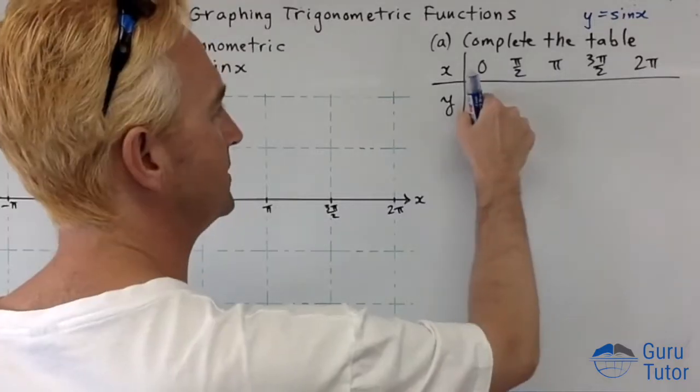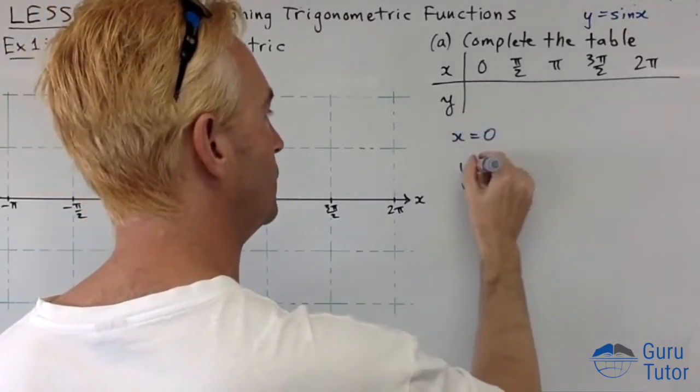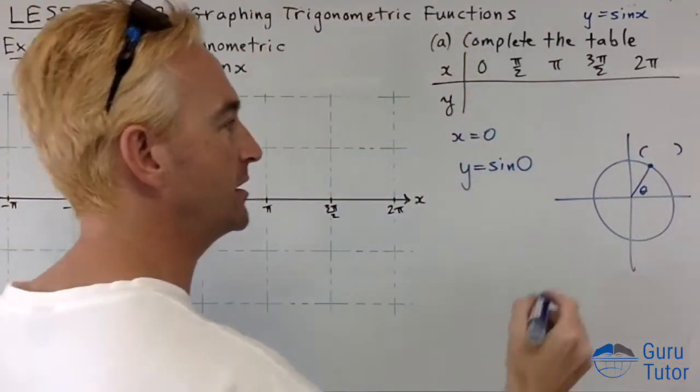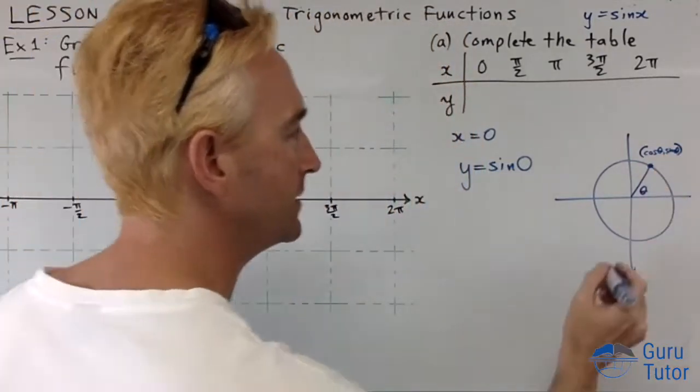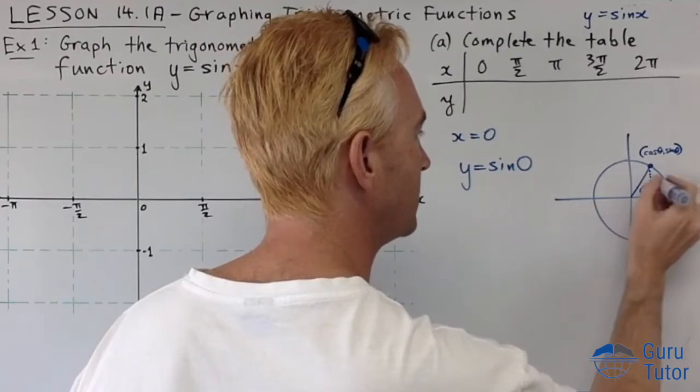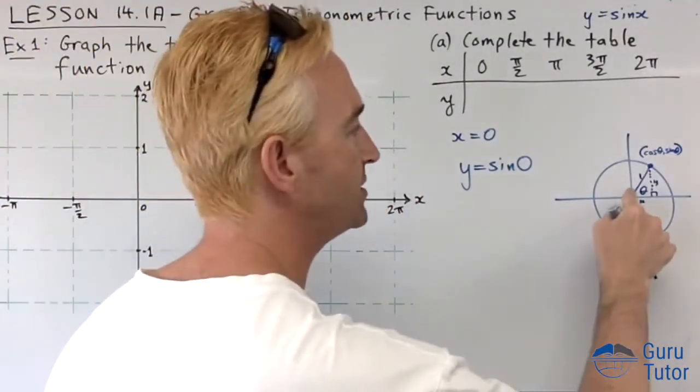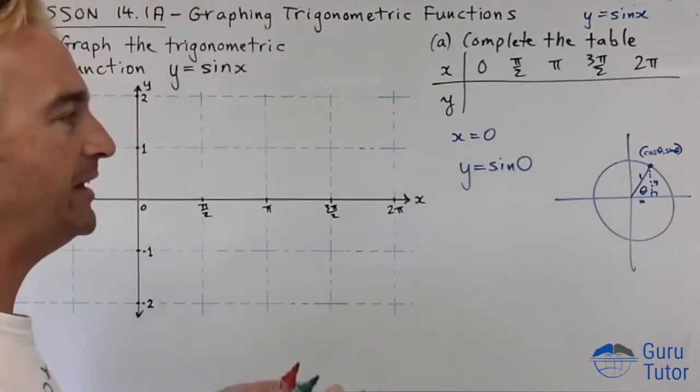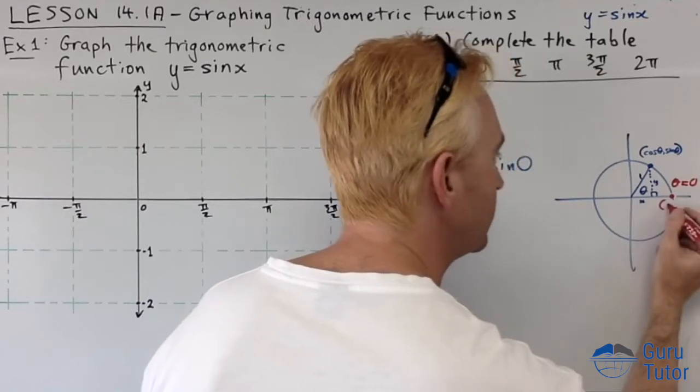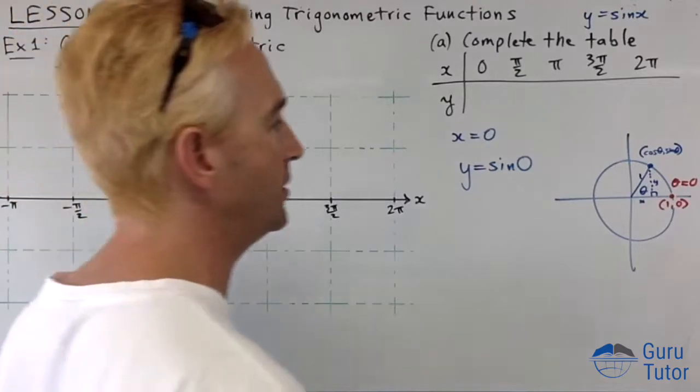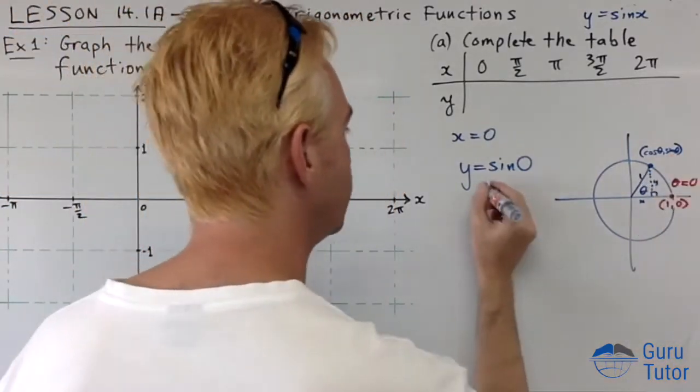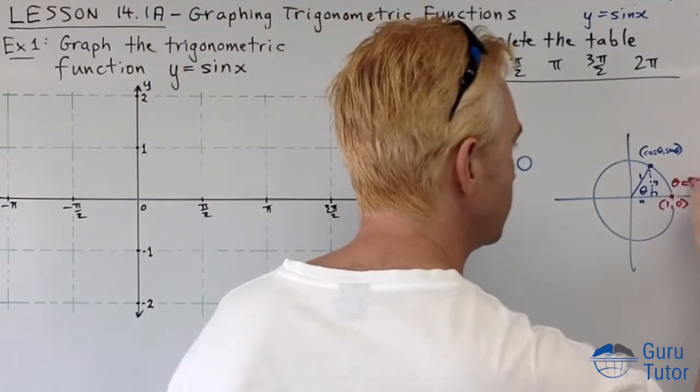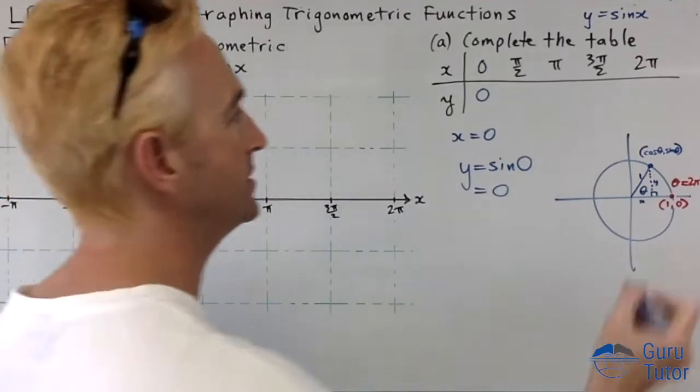We're going to do everything in radians. Let's find the first one. When x is 0, what's the y value? y is going to be sin 0. Remember, the coordinates of the point going around the circle are cos theta, sin theta. If we're at 0 degrees, theta is 0, we are here. What are the coordinates at that point? That point is 1, 0. So sin 0 is whatever the y coordinate is, which is 0. This is also the same for 2π. If theta is 2π, we'll end up at the same place. Remember 2π is 360 degrees, so this will also be 0.